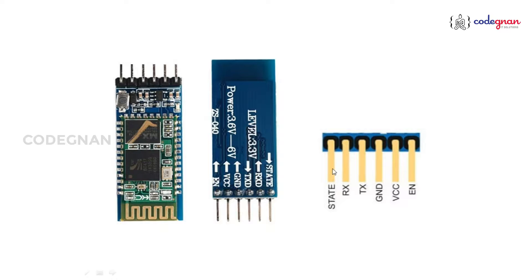The LED works in different ways: if the LED blinks once every two seconds, it has entered command mode. If it blinks repeatedly, it is waiting for connection. If it blinks twice per second, it is ready to pair, and once it blinks twice in one second it has connected successfully with a mobile or another Bluetooth module.